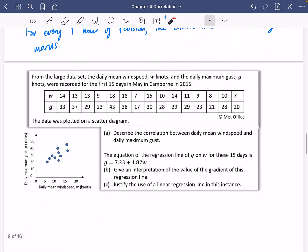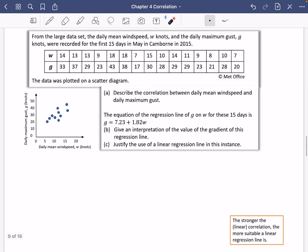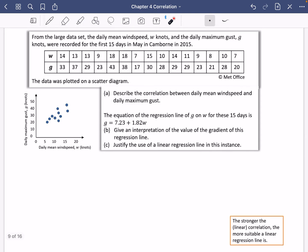So let's have a look at this one that we've got here. And it's to do with the large data set. So from the large data set, the daily mean wind speed W knots and the daily maximum gust were recorded for the first 15 days in May in Camborne in 2015. The data was plotted on a scatter diagram.